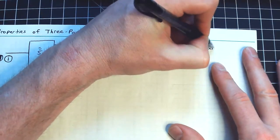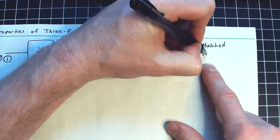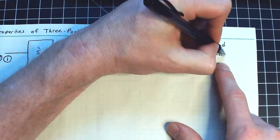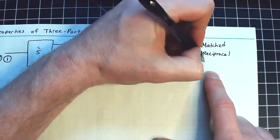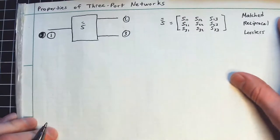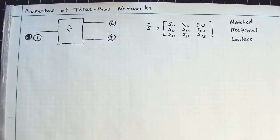First is matching. Second is usually reciprocity. And the third condition is lossless. These are the big three conditions we like to impose on networks to make them interesting and useful.